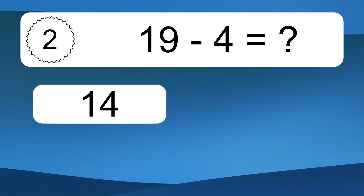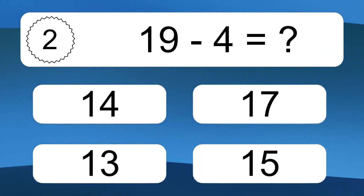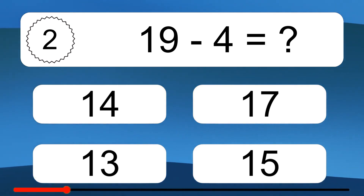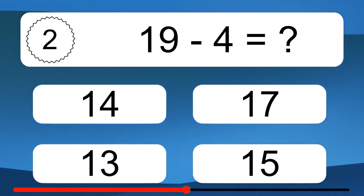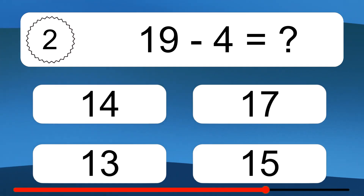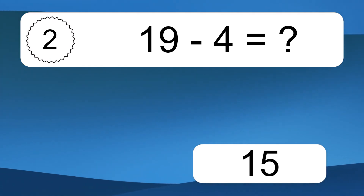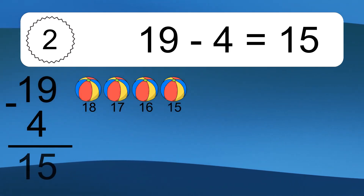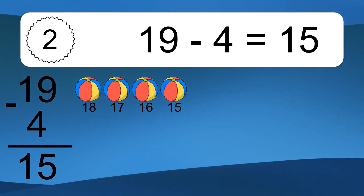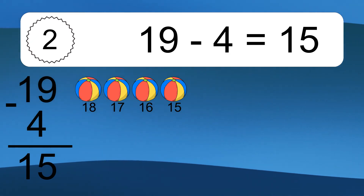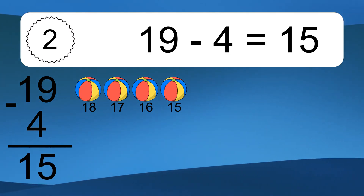19 minus 4 equals what? 19 minus 4 equals 15. Let's count it: 18, 17, 16, 15.